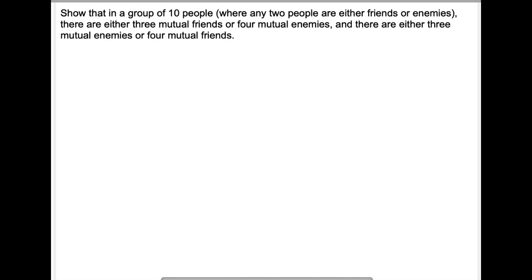Show that in a group of ten people where any two people are either friends or enemies, there are either three mutual friends or four mutual enemies. And there are either three mutual enemies or four mutual friends.